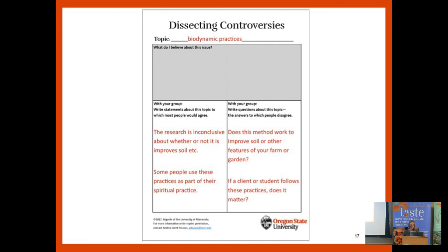Their questions included: does this method actually do anything? The data is all over the place. Another question they thought people would disagree on: if you're talking with a client or student who really cares about biodynamic practices and follows them, does it matter to you as a master gardener or educator? Do you need to tell them 'that doesn't work, there's no research about that, you should probably stop doing that' — which I see a lot. I think it's important to remember that there's a lot of gardening happening out there, and people garden for lots of reasons. Sometimes they get shot down because it's just not in our repertoire. That's also a bias — that's my kick.